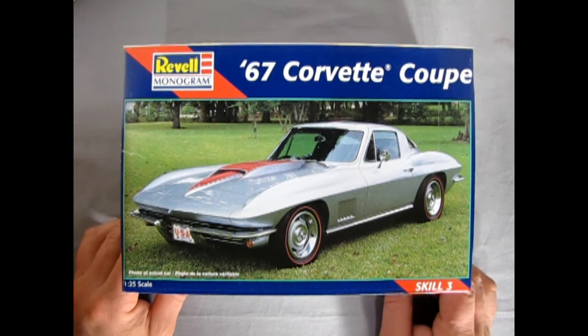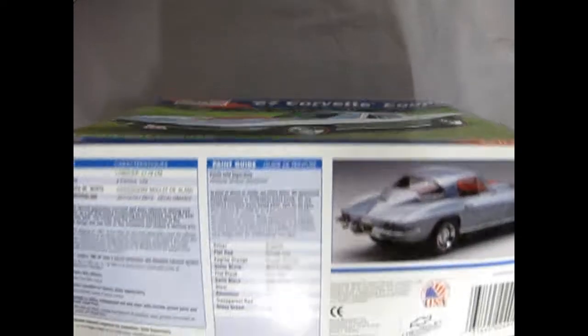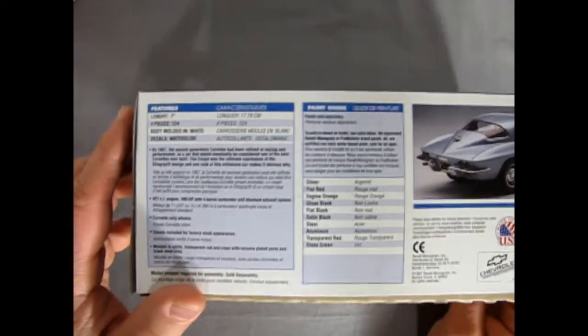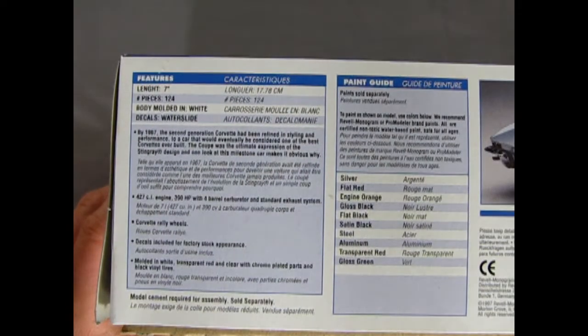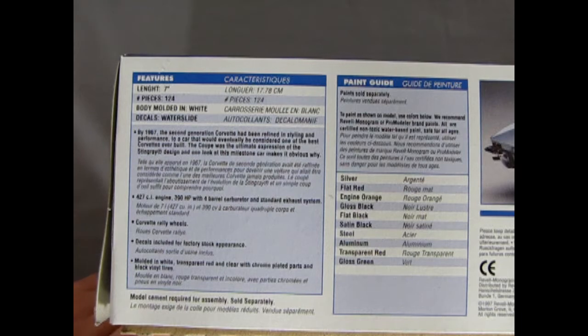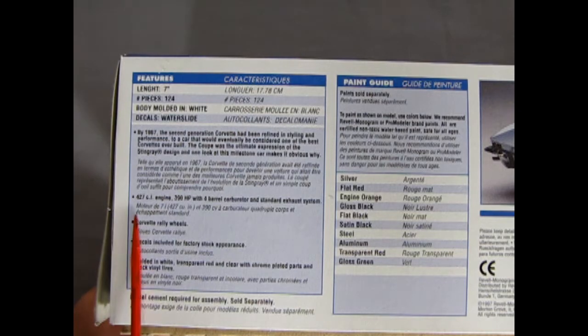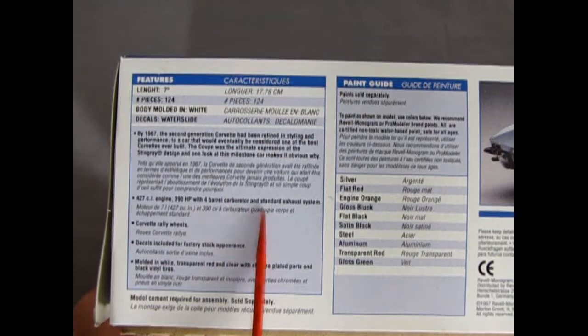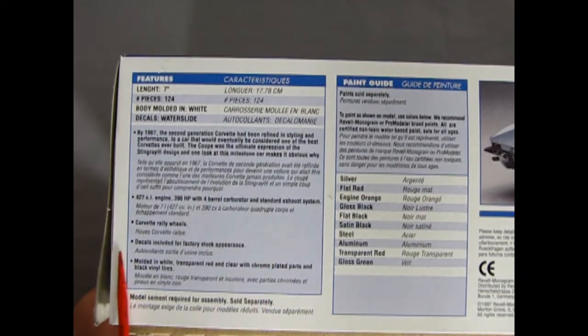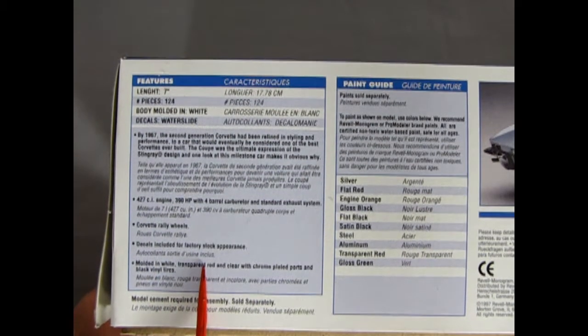Now, one look at this box, of course, means that we've got to tilt it up and take a look at the sides here. And there's all our dimensions onto the kit. So it's got a 427 cubic inch engine with 390 horsepower, 4-barrel carburetor, and standard exhaust system. That's what comes in the kit. You get the Corvette Rally wheels. Decals included for factory stock appearance. Molded in white, transparent red, and clear with chrome-plated parts, and black vinyl tires.